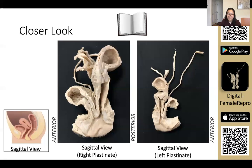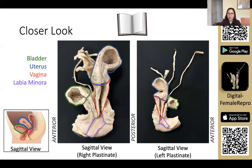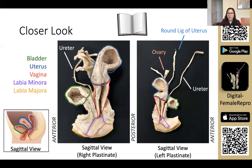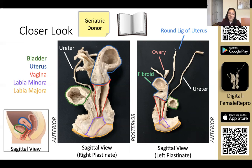Taking a closer look at the plastinates: here is the bladder in dark green, the uterus in blue — which shows anatomical variation in that the uterus is retroflexed — the vagina in red, the labia minora in purple, the labia majora in orange, the left ovary in pink, the left round ligament of the uterus in light blue, and the right and left ureters in white. In addition, there is a uterine fibroid shown in light green, so the plastinate also shows pathology. It is also important to note that the donor was a geriatric female, which accounts for the one-to-one size ratio of the height of the uterine body to the height of the cervix — in a female of reproductive age, the ratio would be two to one instead.